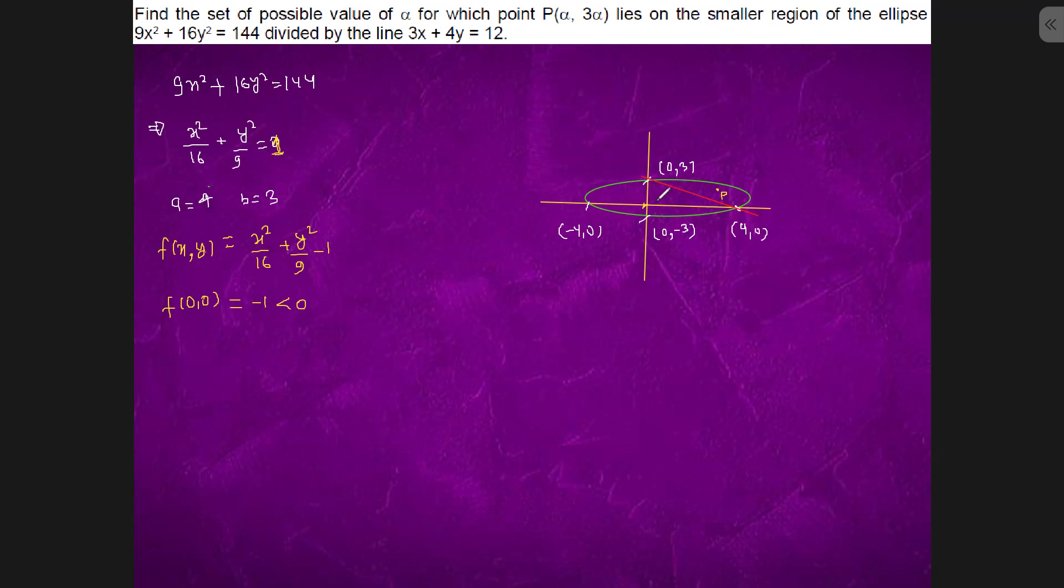Now we will make a function g(x, y) and we will get it like this: 3x + 4y - 12. We will put (0, 0), which gives -12, which is less than 0.